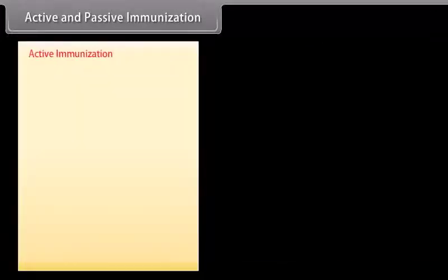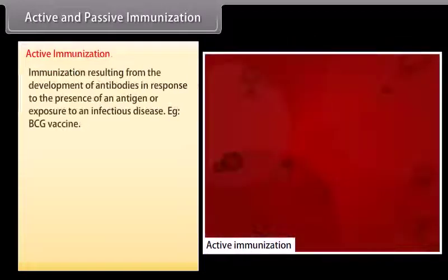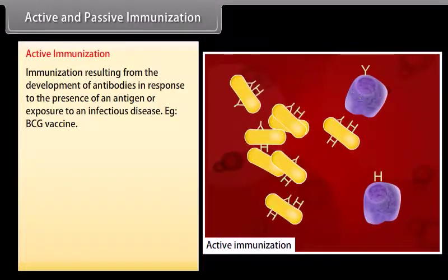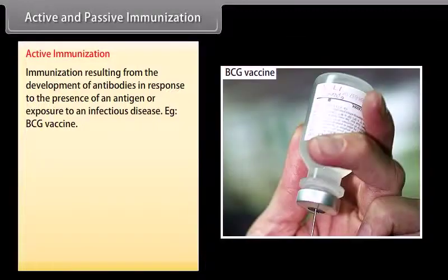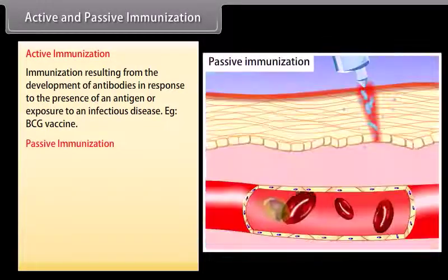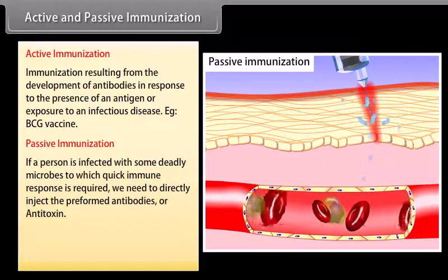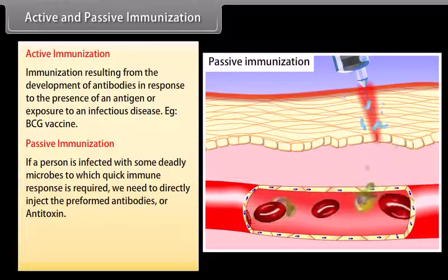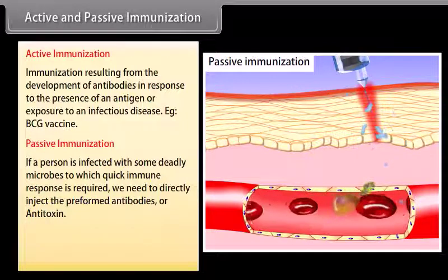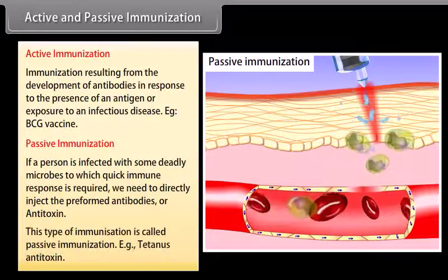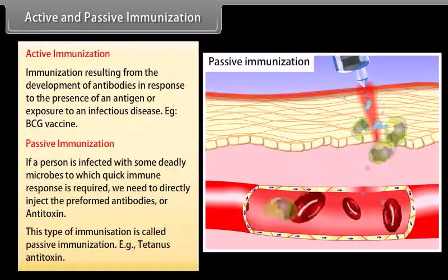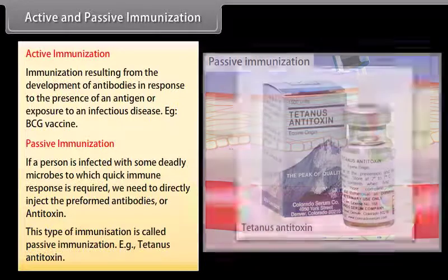Active immunization results from the development of antibodies in response to the presence of an antigen or exposure to an infectious disease — for example, the BCG vaccine. Passive immunization involves directly injecting preformed antibodies or antitoxin when a person is infected with deadly microbes requiring a quick immune response — for example, tetanus antitoxin.